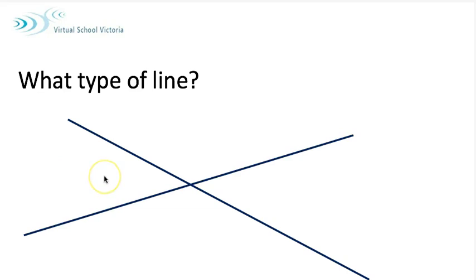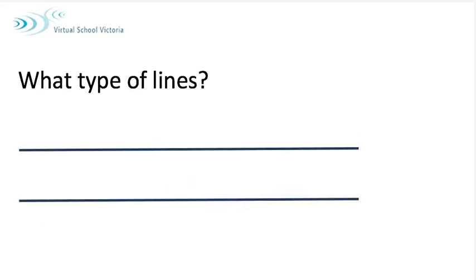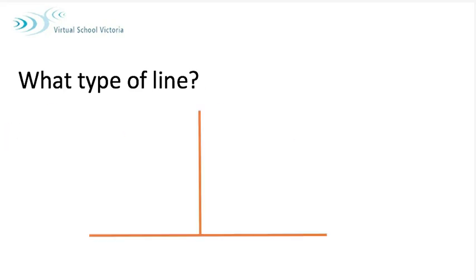These lines are intersecting. Here is our intersection at this point here. We see lines like this in a lot of places. These are parallel lines and these lines just run along like train lines or tram lines.